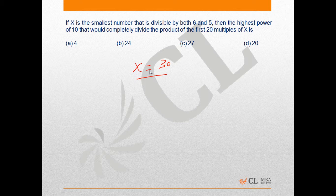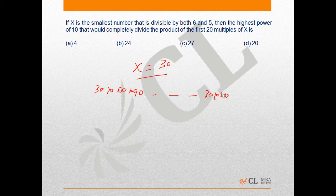would completely divide the product of the first 20 multiples of x. The first 20 multiples of x will be 30×60×90 and so on up to 30×20, which can be written as